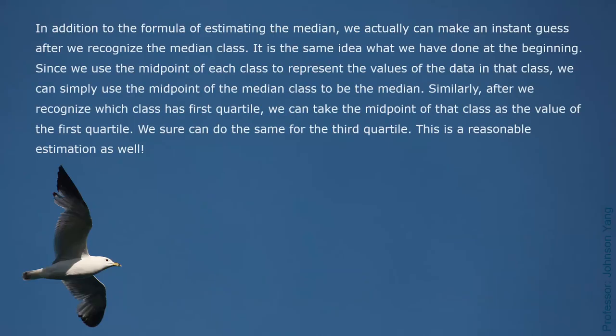In addition to the formula for estimating the median, we can make an instant estimate after recognizing the median class. Since we use the midpoint of each class to represent the data values in that class, we can simply use the midpoint of the median class as the median. Similarly, after recognizing which class contains the first quartile, we take the midpoint of that class as the first quartile value. The same applies to the third quartile.